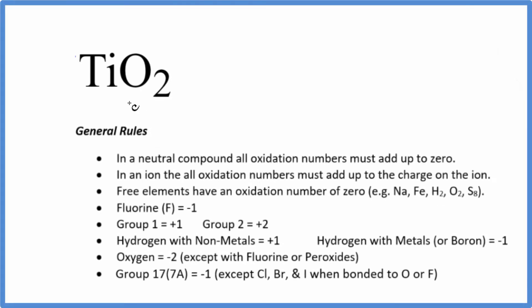In this video we'll find the oxidation numbers for the Ti in TiO2. This is titanium 4 oxide, also called titanium dioxide. The first thing you notice is there's no negative or positive sign after it. That's because it's a neutral compound. All the oxidation numbers are going to add up to zero.